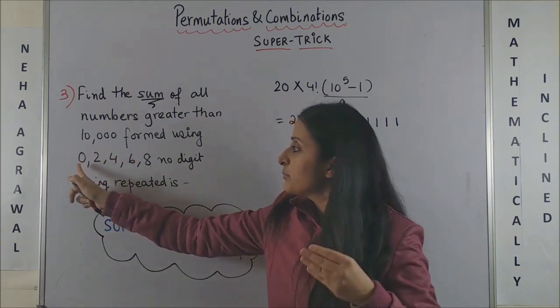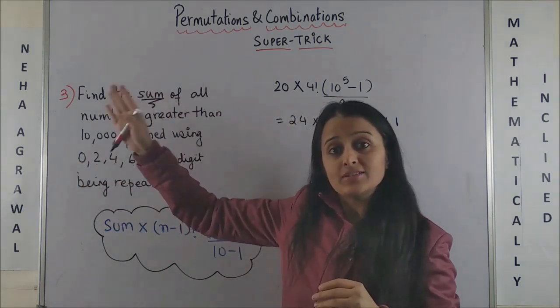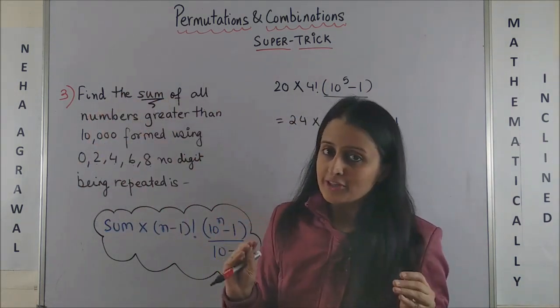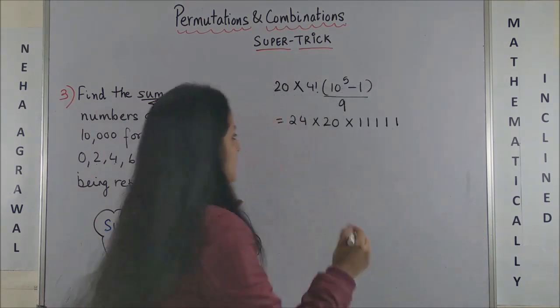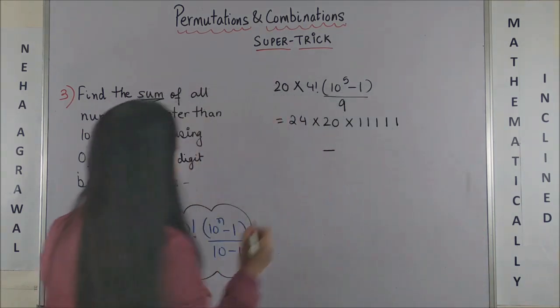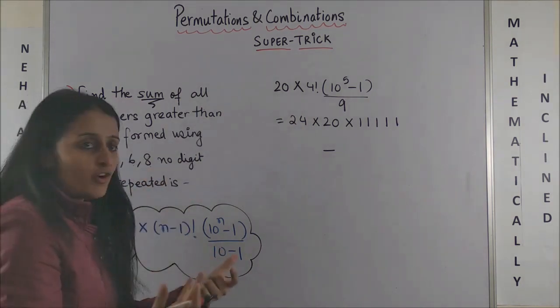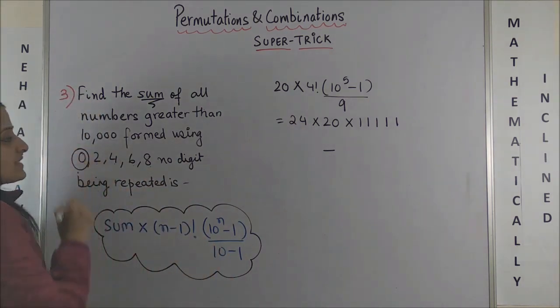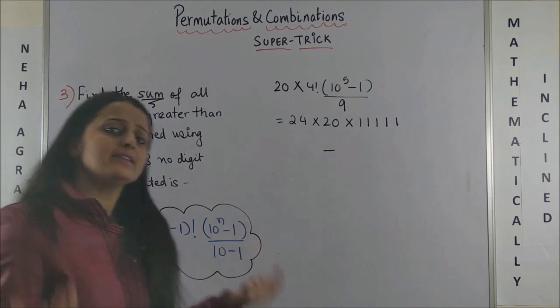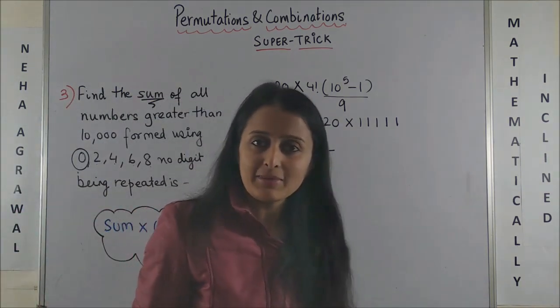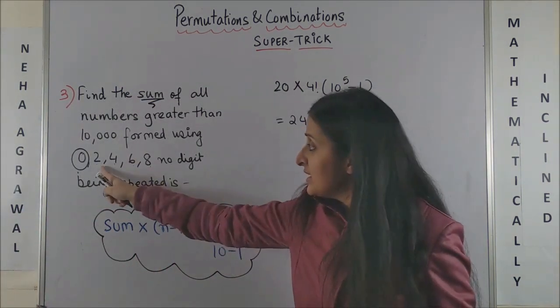So in order to remove that, just like the previous question, we would say minus sum of all the digits when 0 is at the ten thousands place. It's the same as saying a four-digit number created with 2, 4, 6, 8.